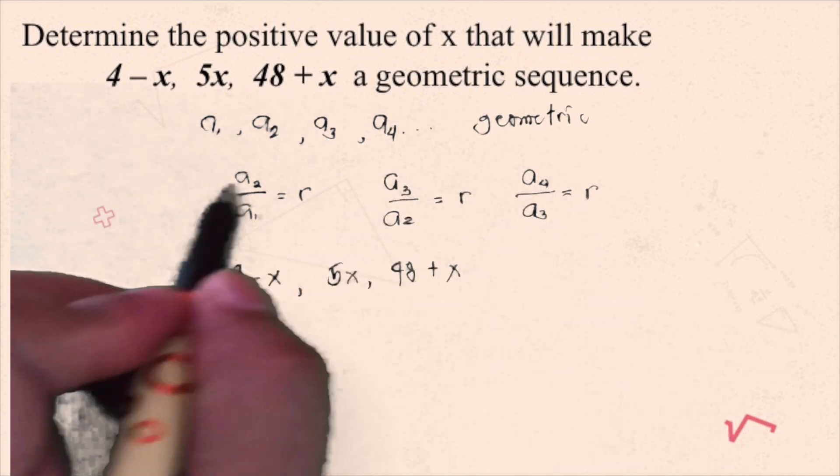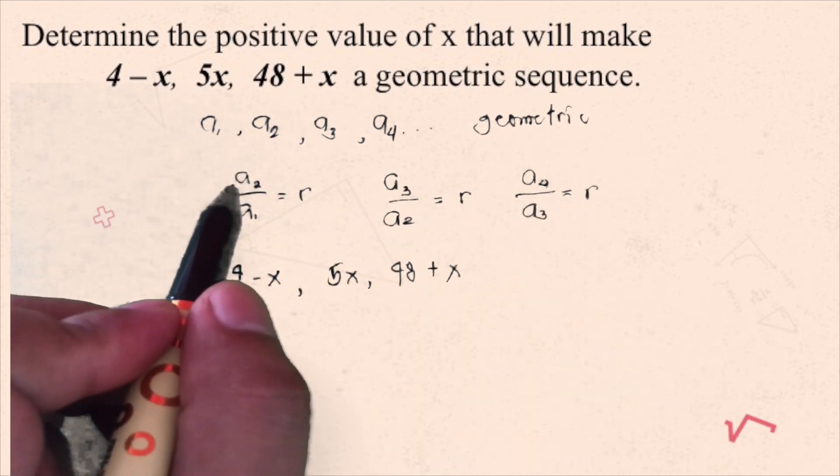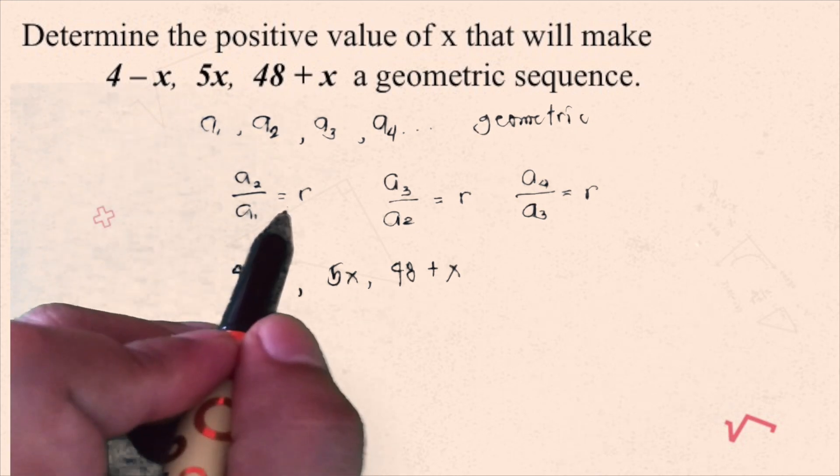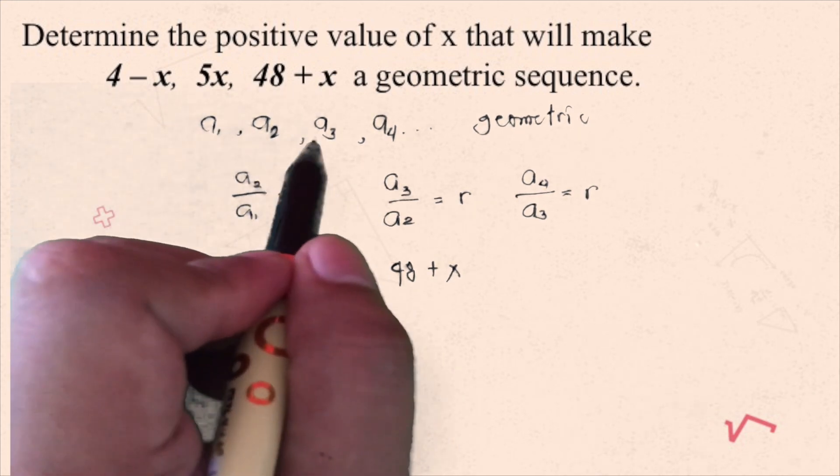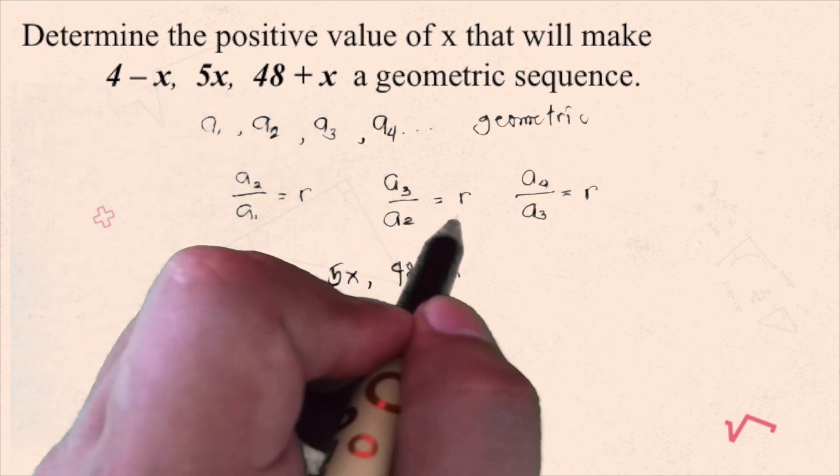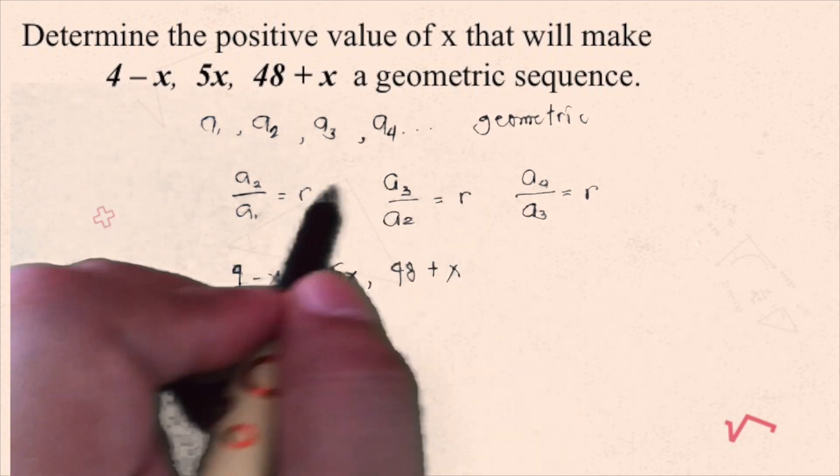Using this concept, we know that when we divide a sub 2 by a sub 1, we'll get the common ratio. And then, same goes also with a sub 3 divided by a sub 2, we'll still have the same value of common ratio.